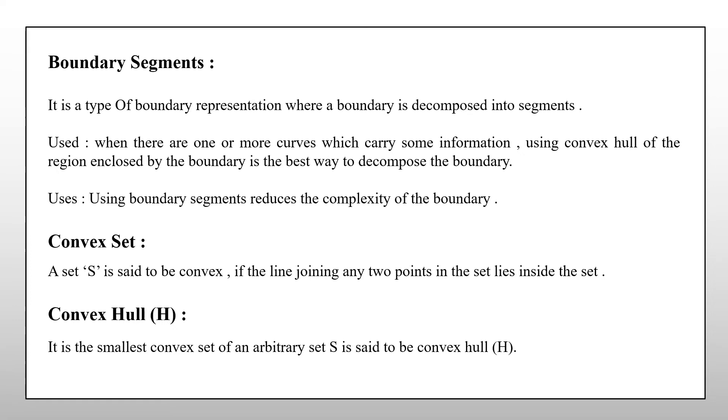If a line joining any two points of a region R lies inside that region then that region R is said to be a convex set and the smallest convex set of an arbitrary set S is said to be a convex hull.